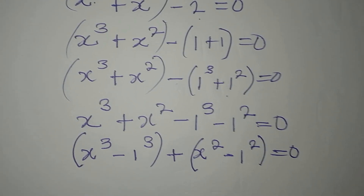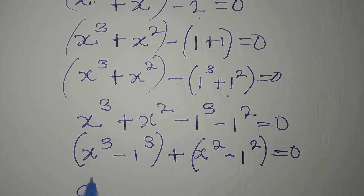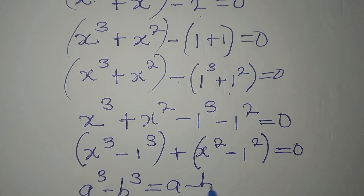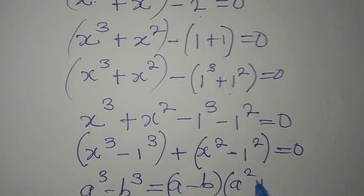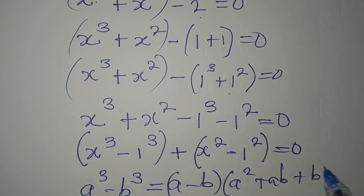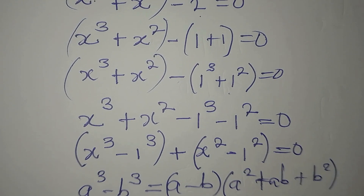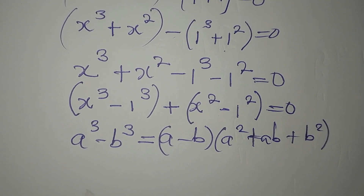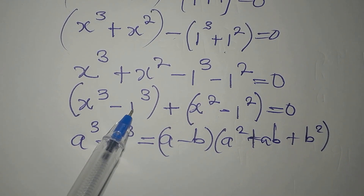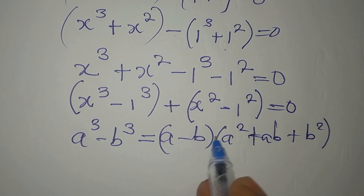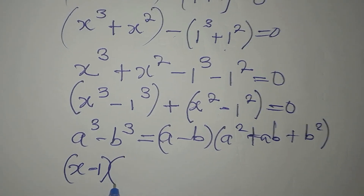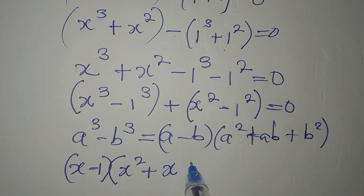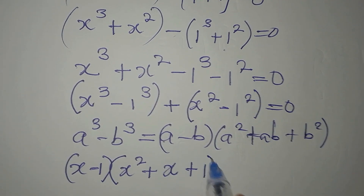Here I have the difference of two cubes. If there is a to the power of 3 minus b to the power of 3, this is the same as (a minus b)(a squared plus ab plus b squared). This is an identity you should know as a mathematics student. Our a is x and b is 1, so substituting: a minus b is x minus 1, a squared is x squared, ab is x times 1 which is x, and b squared is 1 squared which is still 1.